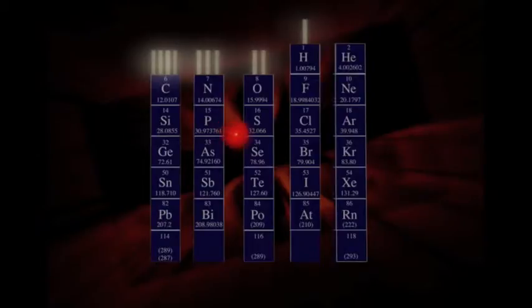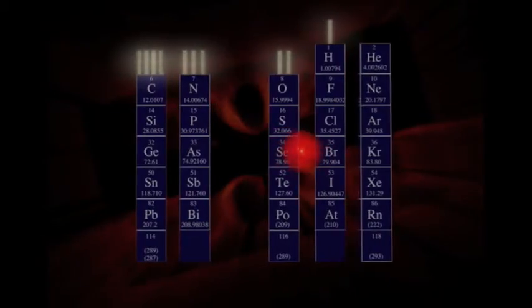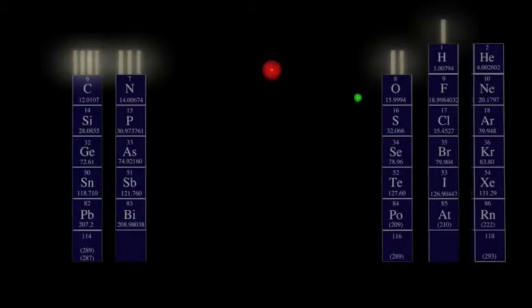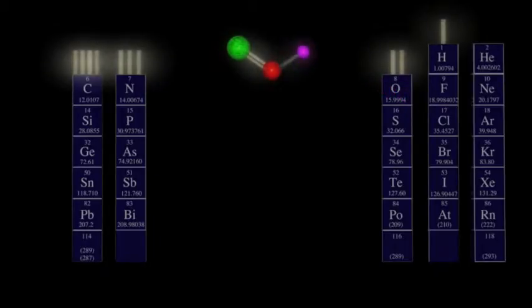Now this carbon atom wants to make four bonds, and it is pretty versatile about how it does this. Let's give it a double bond with oxygen, satisfying oxygen's desire for two bonds. And let's give it one hydrogen. That's a total of three bonds for carbon. It still wants another. So let's give it another carbon for its fourth bond.